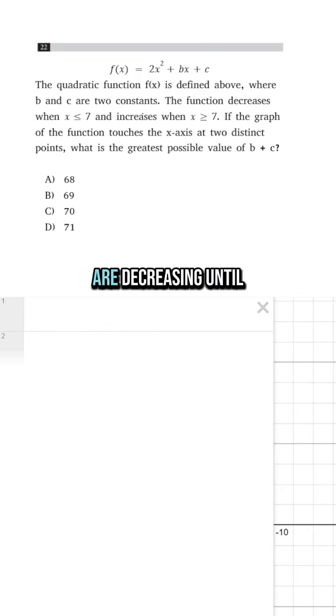If we are decreasing until x is 7 and then we are increasing after x is 7, that means that our graph opens up. Now, if our graph touches the x-axis twice and it also opens up, that means that the vertex must have a negative y value.